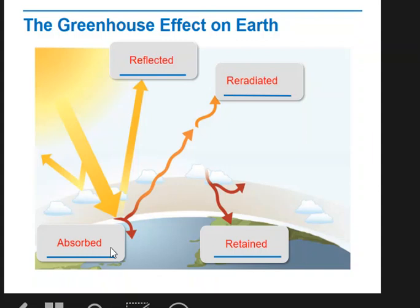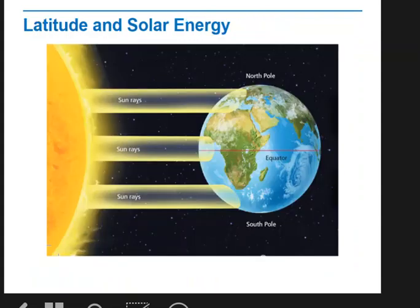This diagram shows that most of the sun's heat is absorbed by the earth. Some of it is reflected as light, and some of it bounces back off the earth and back into space as heat — or re-radiated. And of course, a lot of the heat is retained. That's one way that the greenhouse effect or the atmosphere contributes to the different climates on earth.